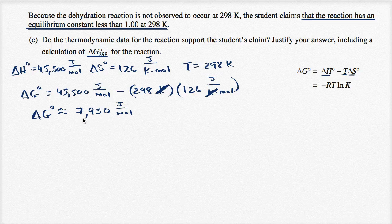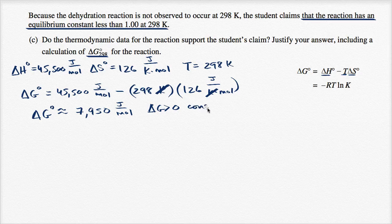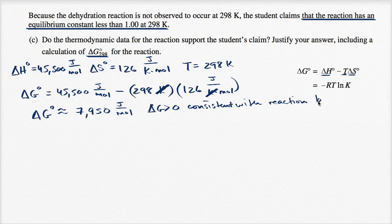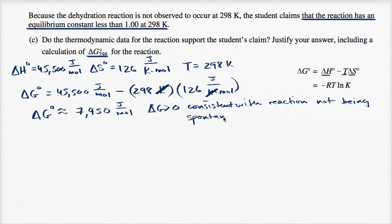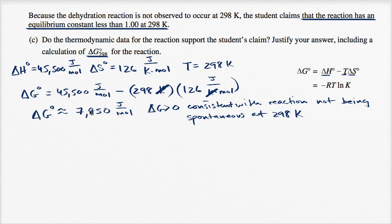The fact that delta G is greater than zero tells us the reaction is not going to be spontaneous at that temperature, which is consistent with our observations. So delta G greater than zero is consistent with the reaction not being spontaneous at 298 Kelvin. That's always a good reality check — are the things you're seeing consistent with what the question describes.